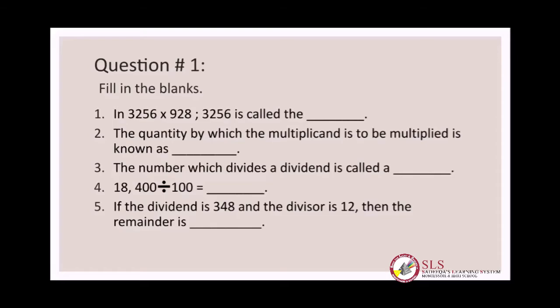You can see that 3256 is bigger than 928. According to multiplication, the bigger number will come at the top, and the top number is called the multiplicand.